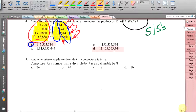It says find a counterexample to show that the conjecture is false. Okay, we're trying to come up with an example, that's a counterexample to prove something's false. So the conjecture is someone's telling us any number divisible by 4 is also divisible by 8. Well, let's look at this one.